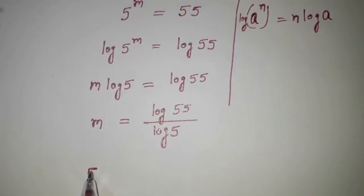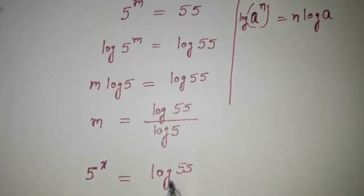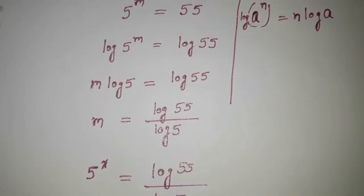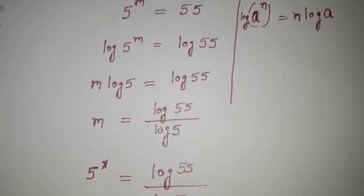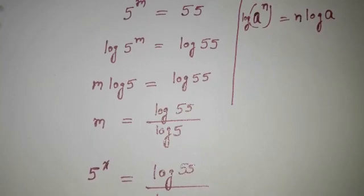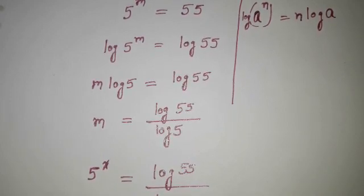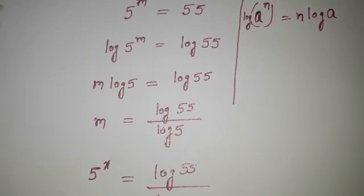Here we can write m as 5 to the power x, so 5 to the power x equals log 55 divided by log 5. Now once again I am taking log on both sides: log of 5 to the power x equals log of log 55 divided by log 5. The x comes in front, so x times log 5 equals log of log 55 over log 5.